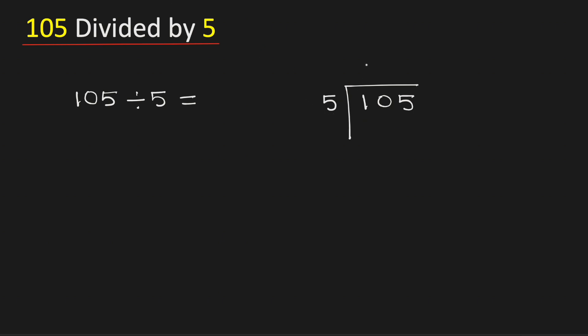We know that 5 times 2 is 10. Subtract, we get 0. As 0 is less than 5, we will bring down this number 5 here. Now we can remove this 0 as there is no meaning of zeros on the left.